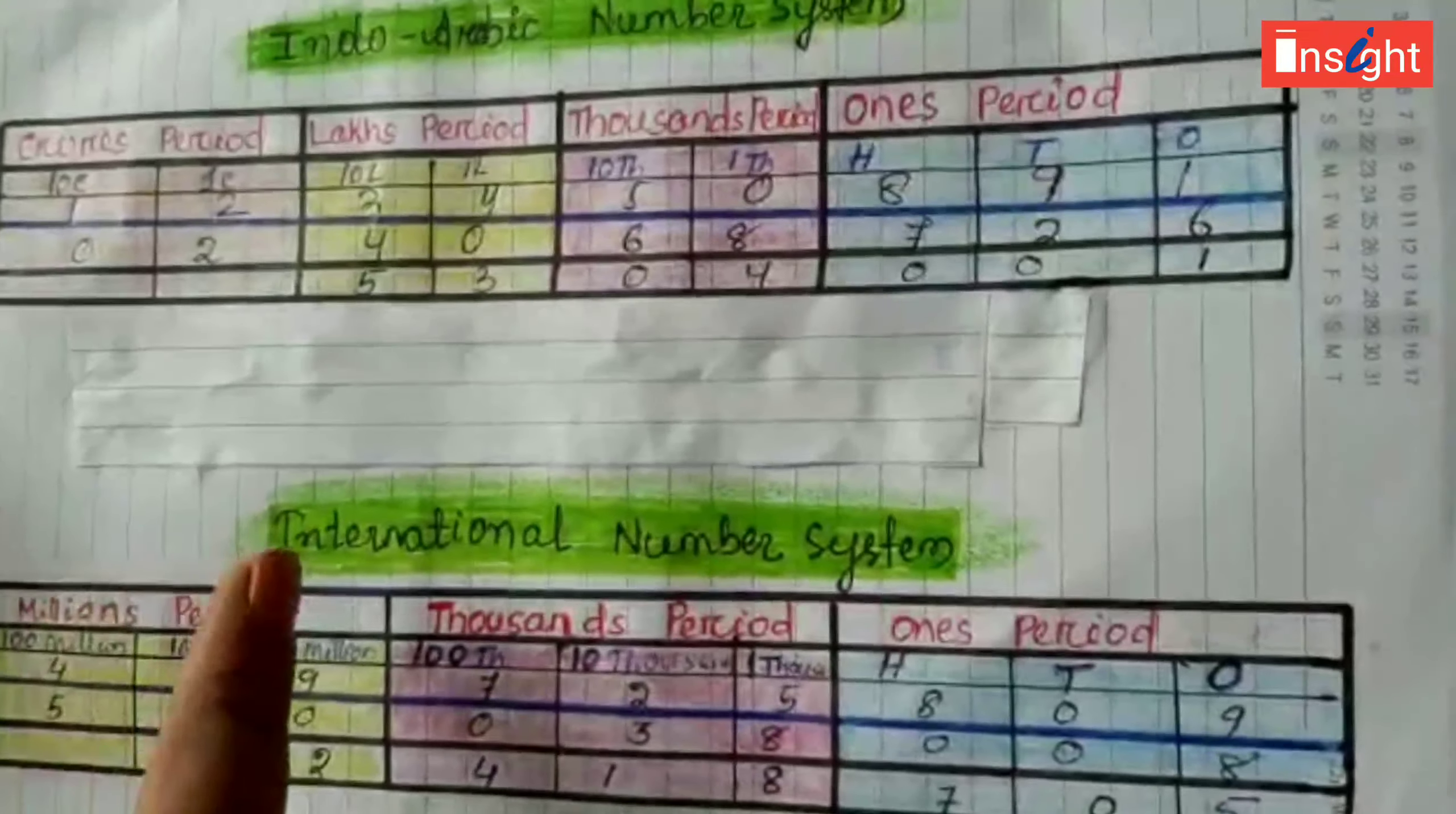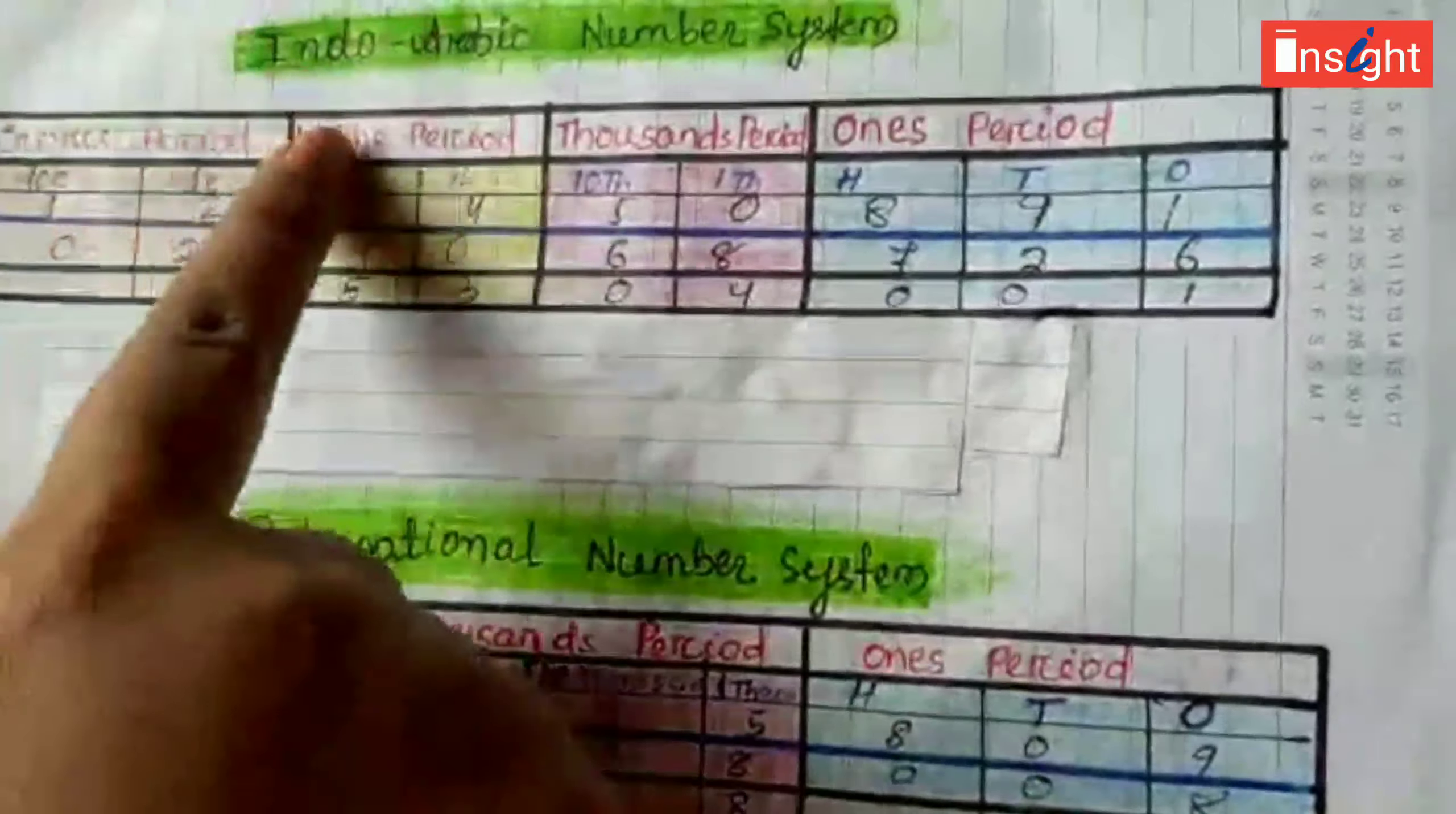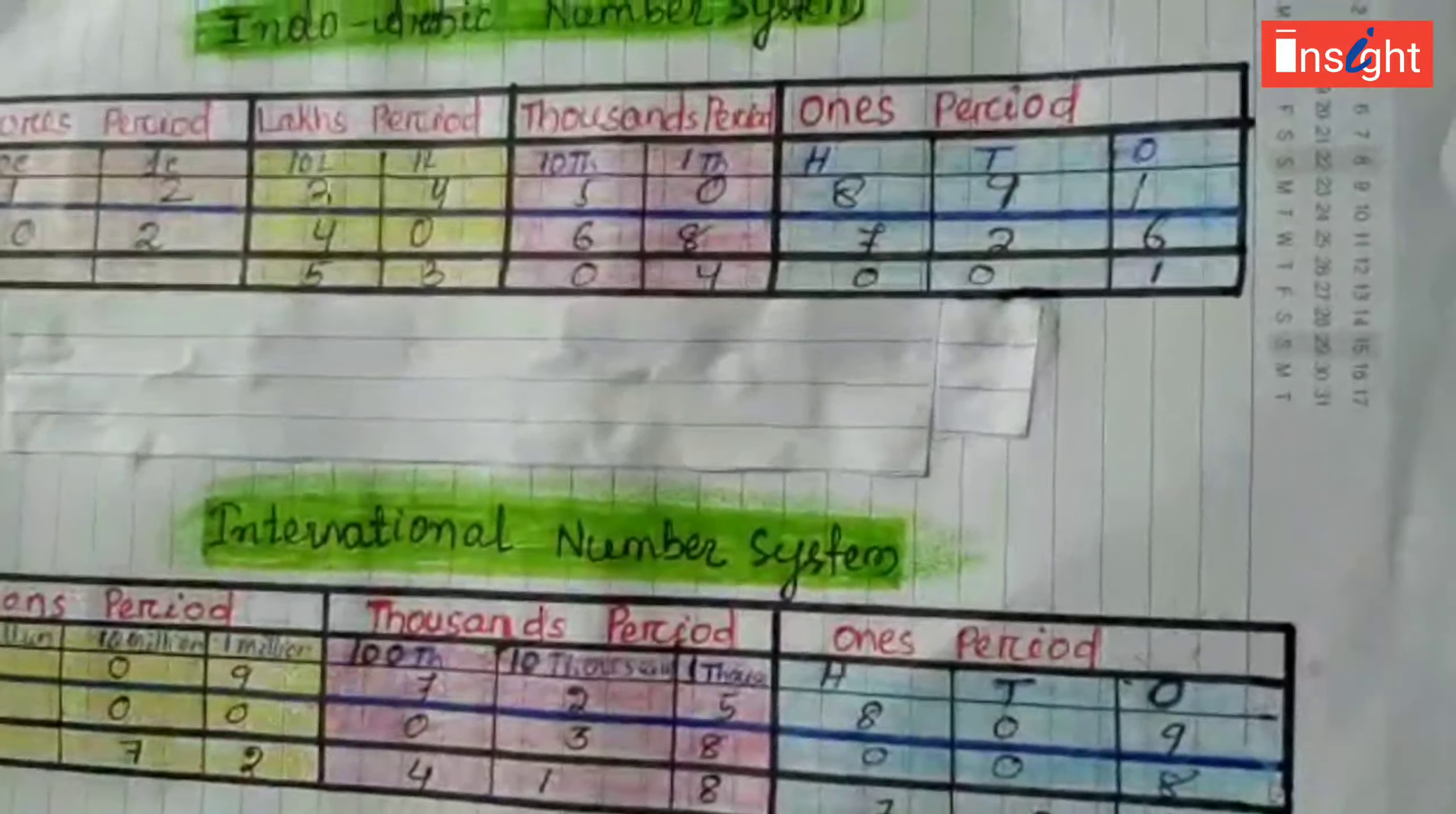Guys, you can see here two number systems. Upper one is Indo-Arabic number system. Downwards means International number system.